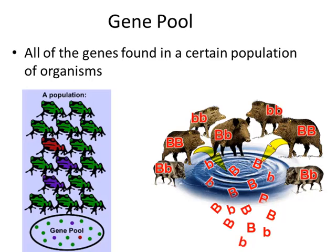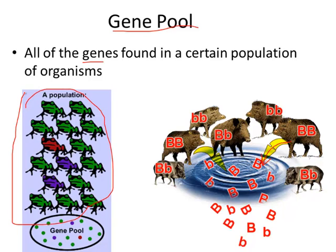When talking about a population and fitness, it's important to define the term gene pool. It's not a literal pool of water, but all the alleles and genes found in a population. For example, in a frog population, the alleles most common are green — there must be an advantage to being a green frog over being purple or red. A gene pool is all of the genes found in a certain population of organisms.